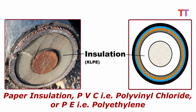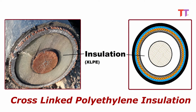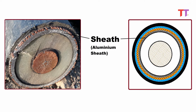Insulation material can be paper insulation, PVC that is polyvinyl chloride, or PE that is polyethylene. In this case, the insulation is XLPE. We can also see a layer of aluminum sheath covering the insulation.